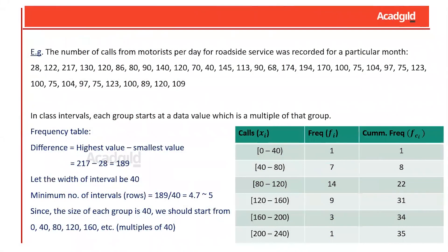When the range of observations is very high, the concept of class intervals comes in. We have a data set showing the number of calls made by motorists per day — the range is high. We group the data into intervals where each group is called a class. The class width is calculated by taking the difference between the highest and minimum data value and dividing so that the total number of rows falls between 5 and 10. Here 40 is the class width. Once the grouping is done, data no longer remains discrete — it has become continuous.